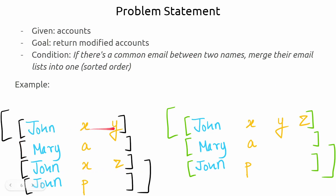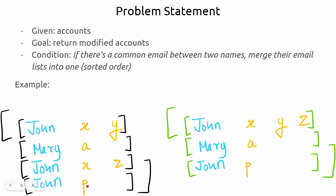For example, this John has two emails X and Y, and this other John has two emails X and Z. Because there is a common email X between both of them, we merge their email lists into one — giving John emails X, Y, Z. Mary has only email A, so she stays as is. The last John with only email P shares no common email with anyone, so he is a completely different person.